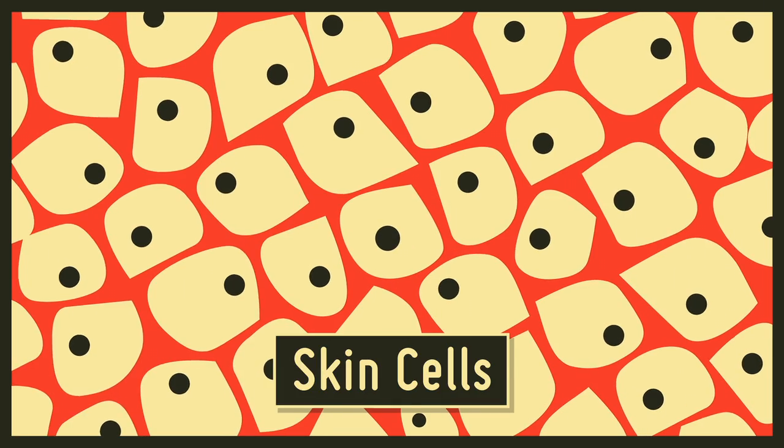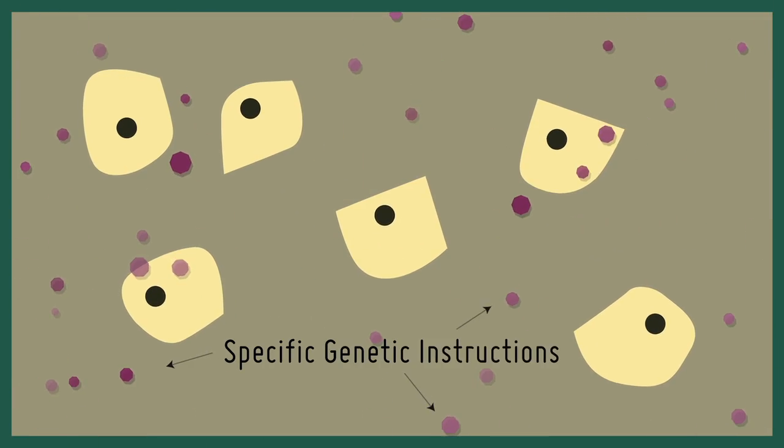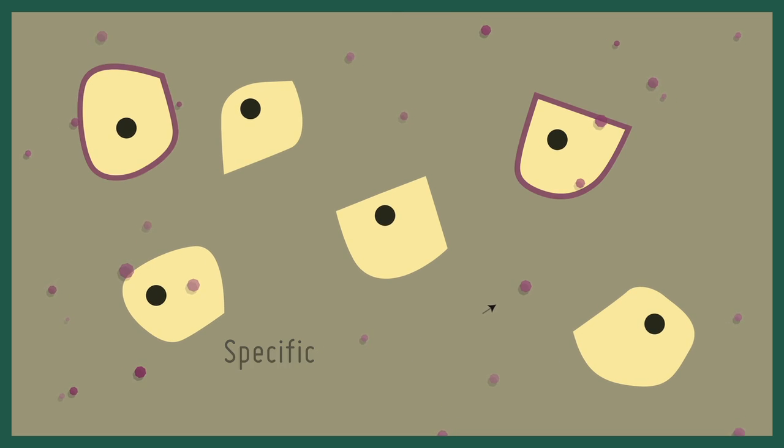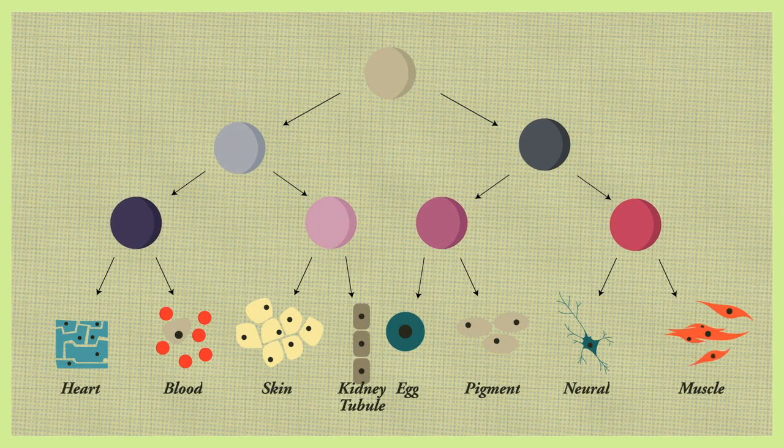However, if some adult cell types are taken, grown in plastic dishes and given specific genetic instructions, over time, a small number of these cells will reverse from their differentiated state and develop the ability to re-differentiate into any cell type in the body.